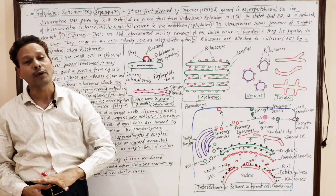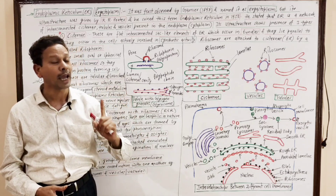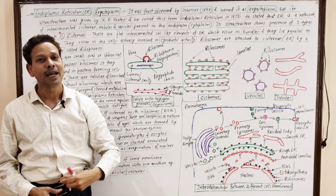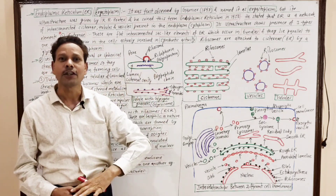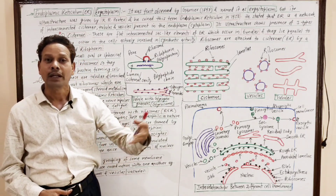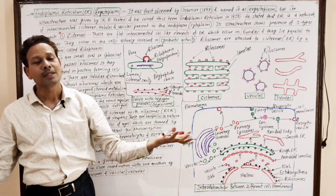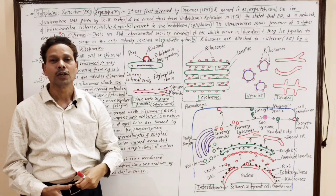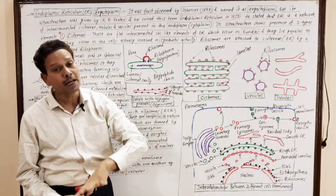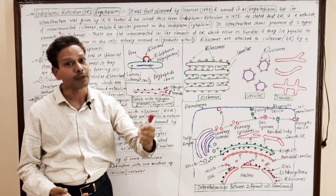Today we will cover another cell organelle: Endoplasmic Reticulum, ER or ergastoplasm. As the name indicates — endoplasmic means inside the cytoplasm, and reticulum means there is a network. That is why these cell organelles are mainly found in the deep parts of the cytoplasm, near the nucleus. So they are named endoplasmic reticulum — inside the cytoplasm, reticulum network.